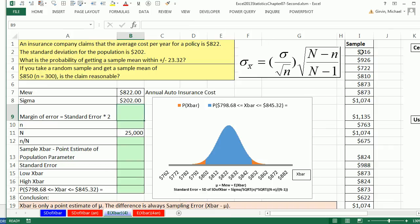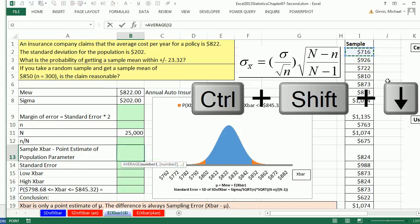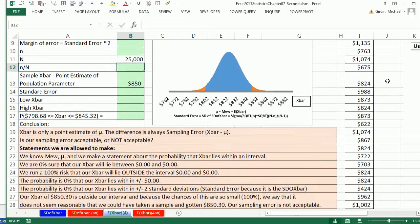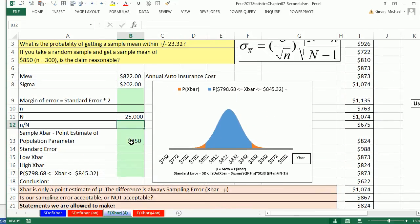Now here in this example, we have the sample data. Sample x-bar, remember it's a point estimator of the population parameter. We're going to go ahead and take our sample. It had to be a random sample. We have our data over here, Control Shift Down Arrow, Shift Enter to put that in the cell and jump up. So we actually took our sample here of $850.